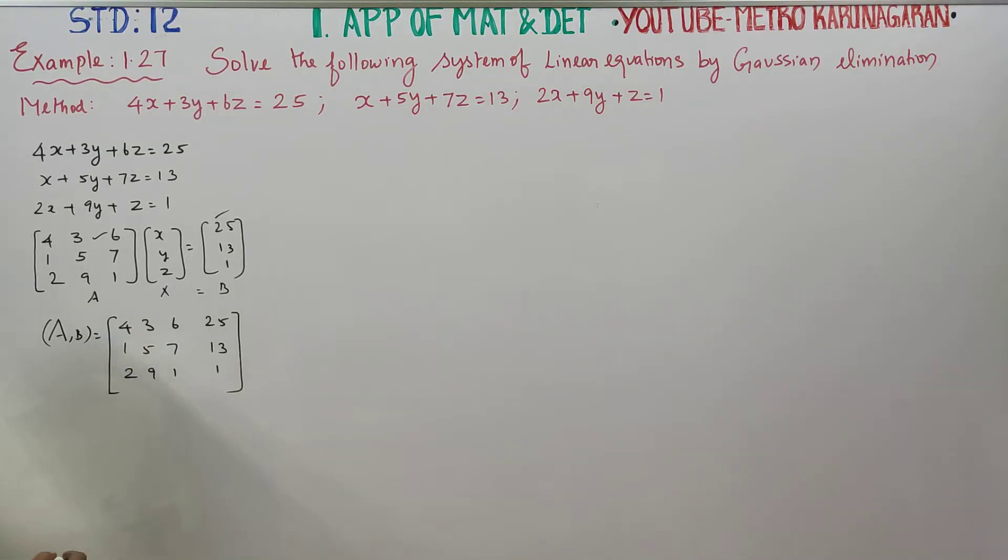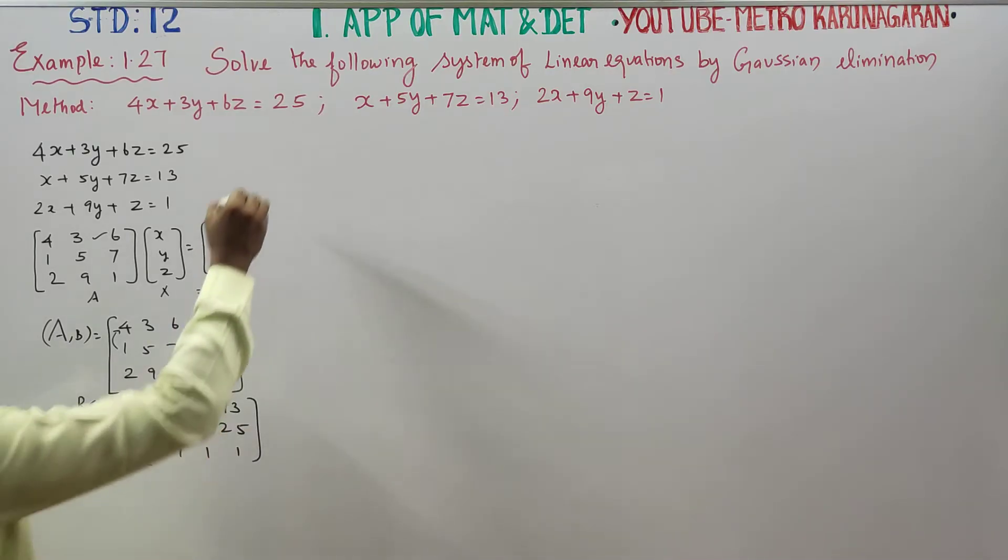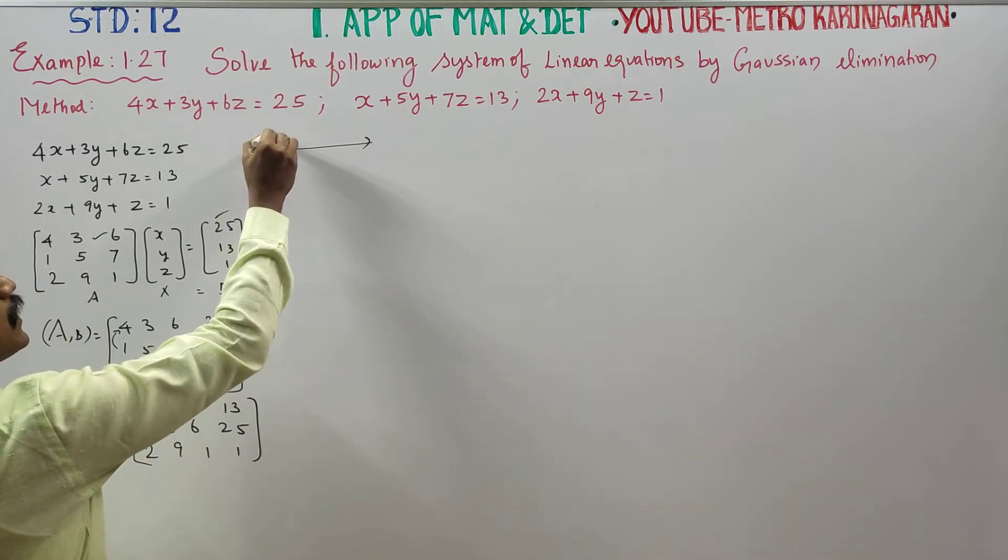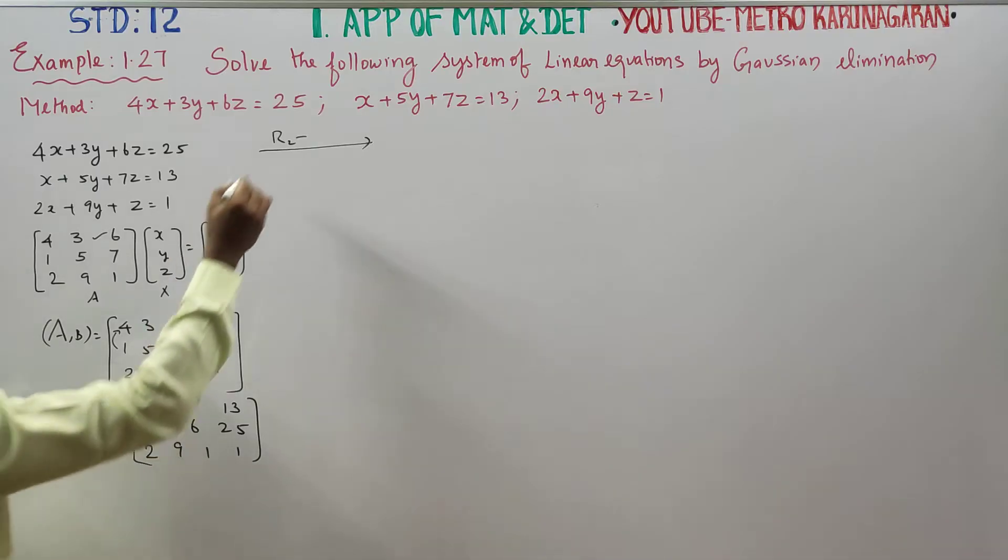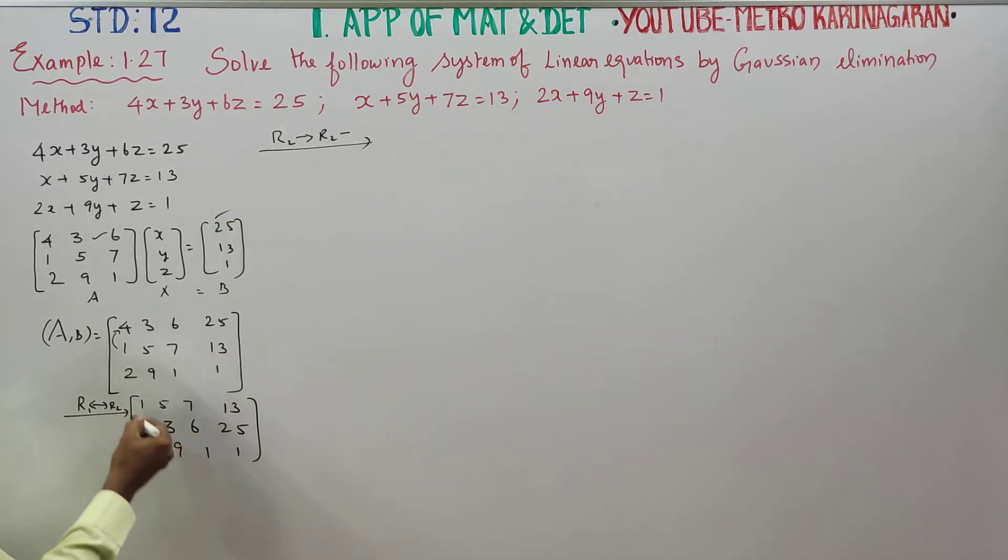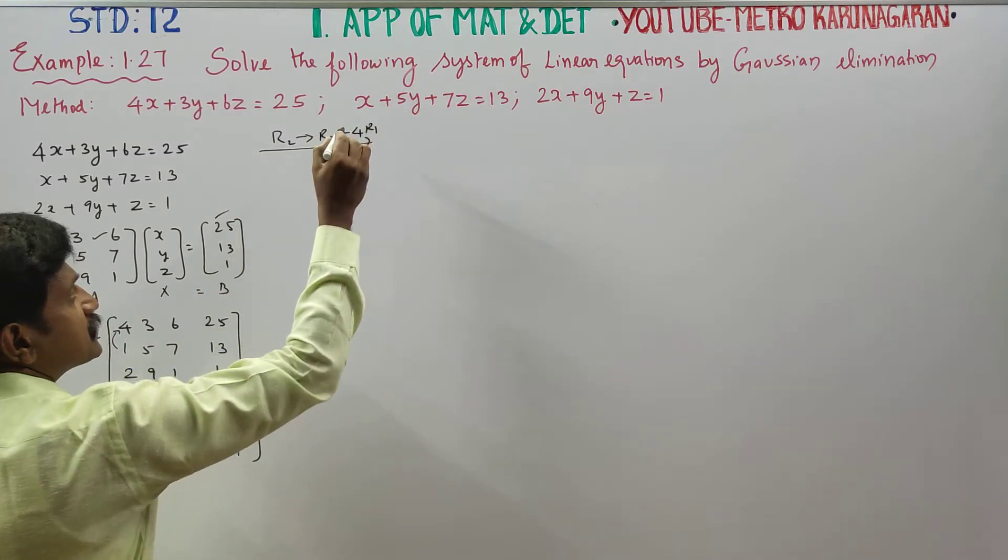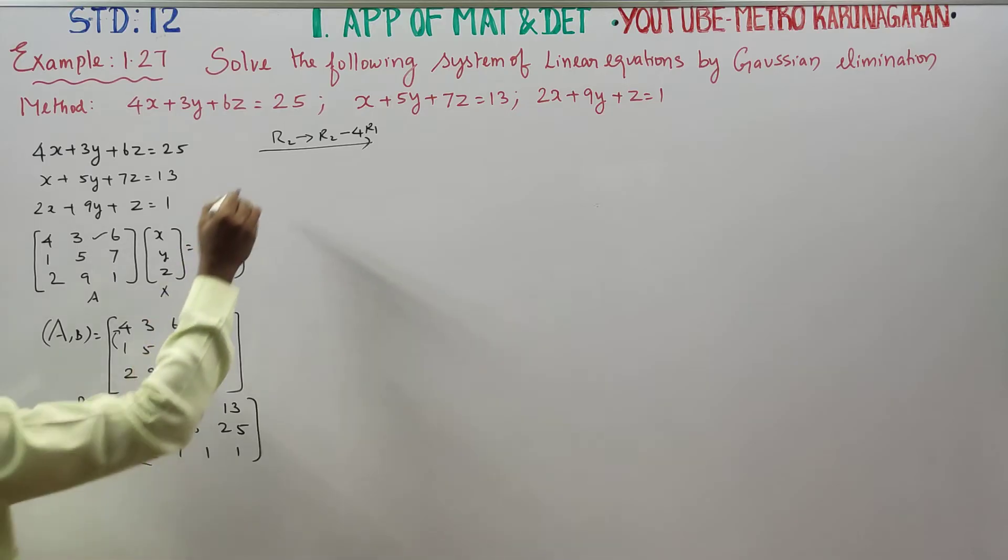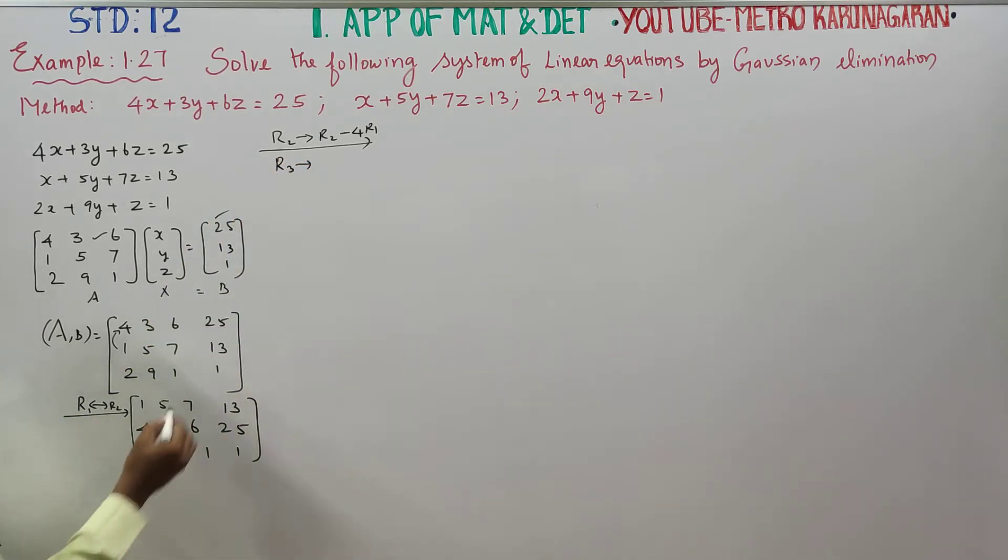Now, I am going to interchange R1 and R2. Interchange is equal to 1, 5, 7, 13. 4, 3, 6, 25. And now, 2, 9, 1, 1. R2 is equal to R2 minus 4 times R1. R3 is equal to R3 minus 2 times R1.